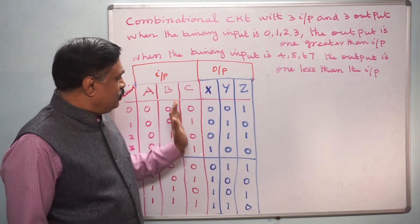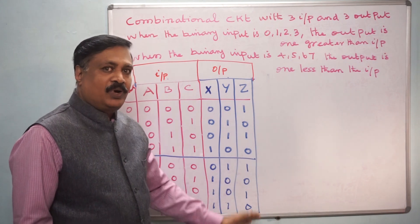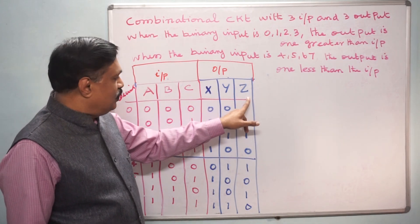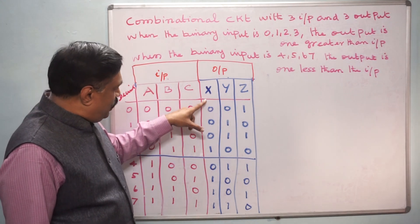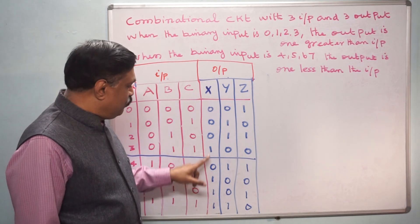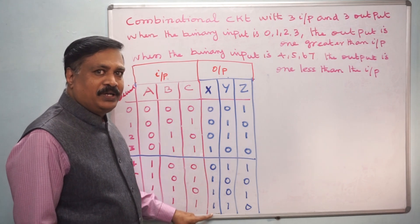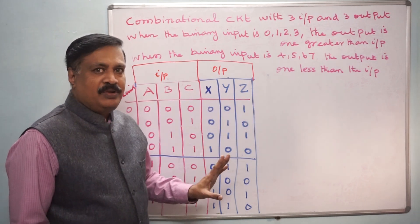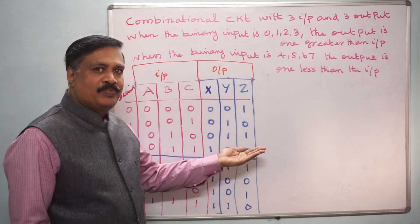Here it depends upon the input only. To design a circuit we have to write an equation. How to write an equation? There are 3 outputs, therefore we have to write 3 equations. For X, there are 4 ones — that means 4 minterms. We have to add these 4 minterms and solve. I am not going to write the equation explicitly because it is very fundamental; I am directly going to write a Karnaugh map.